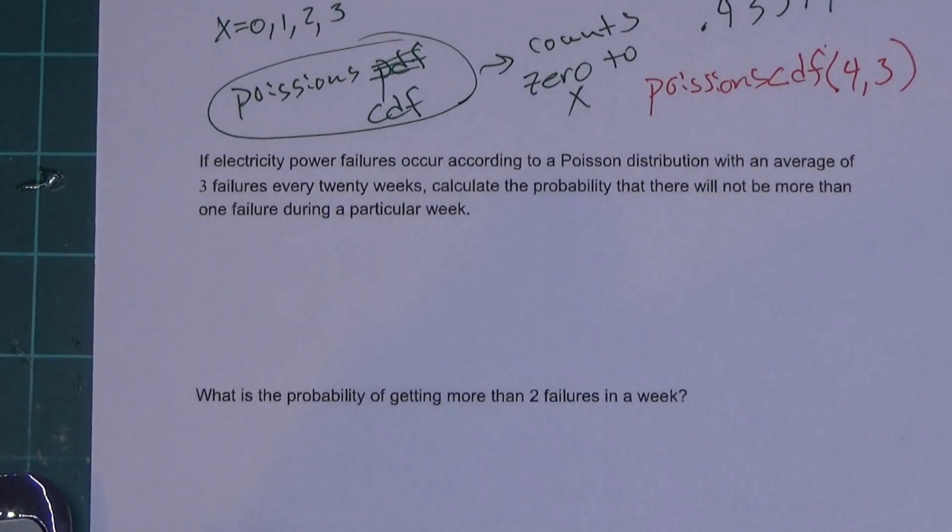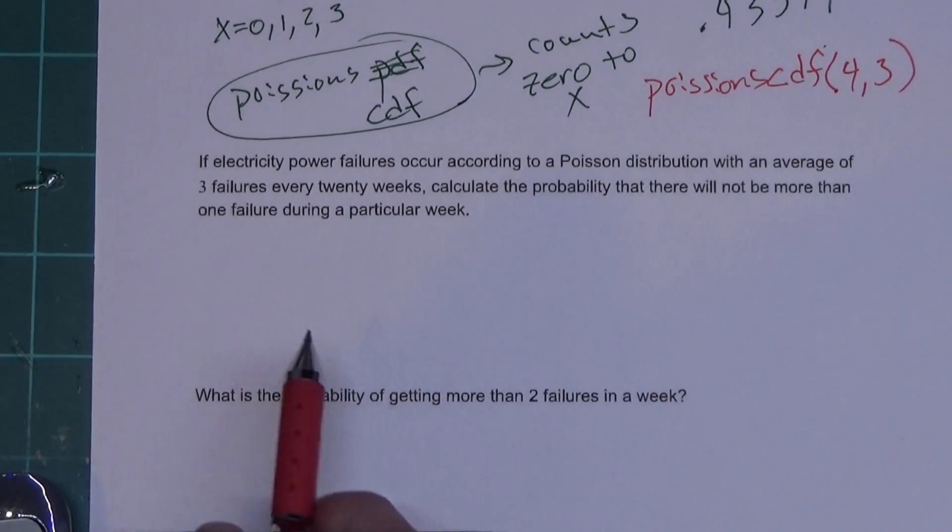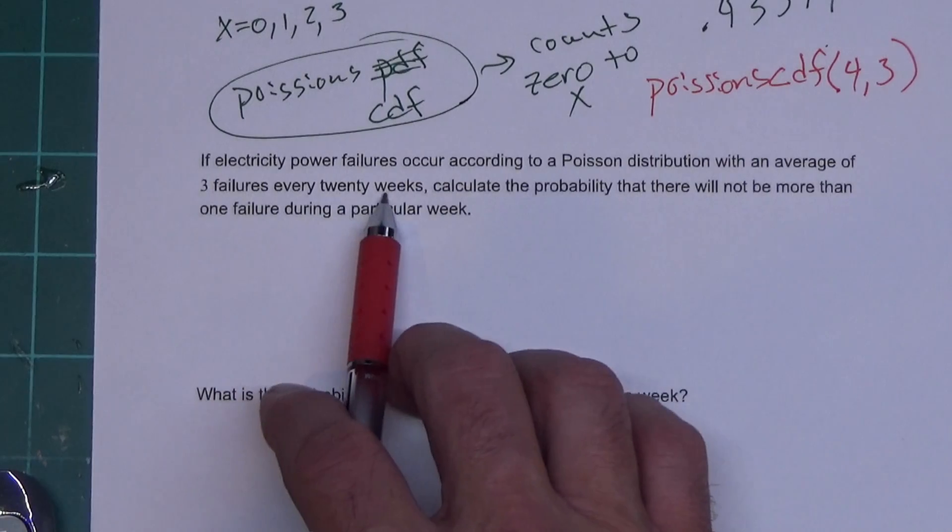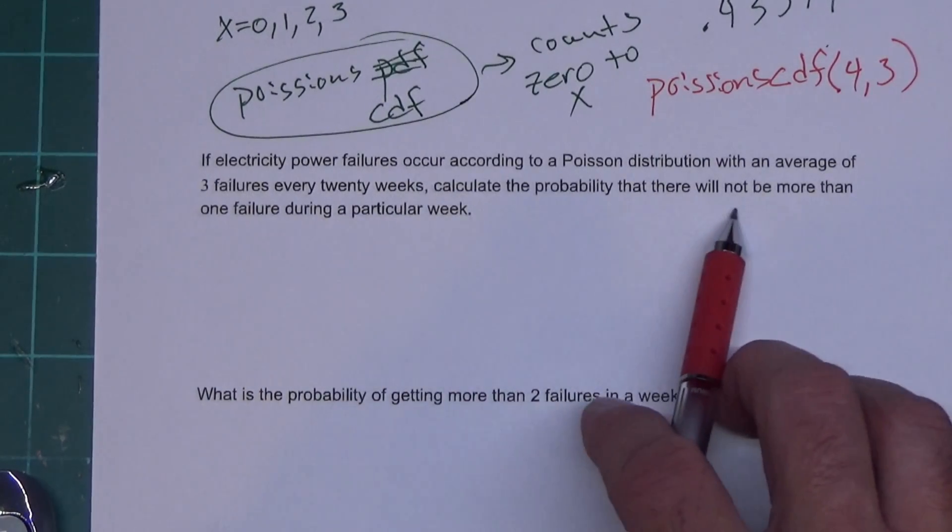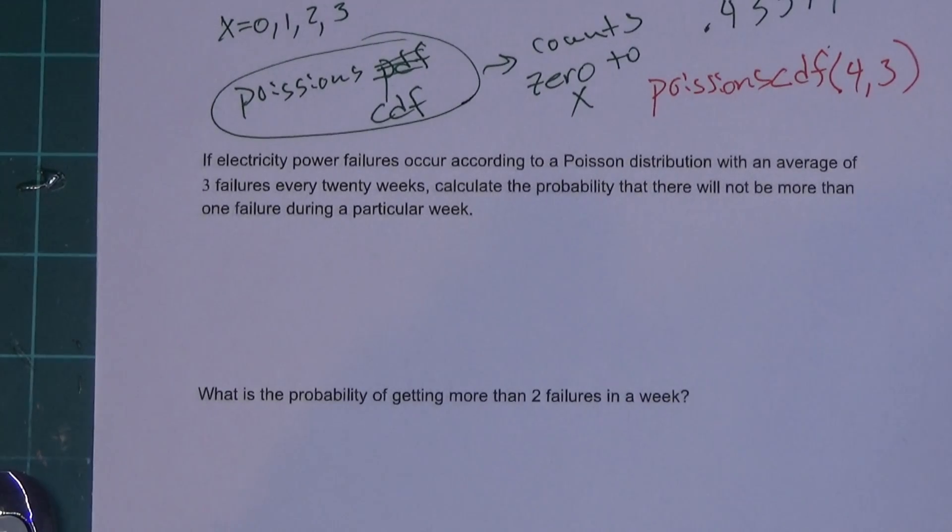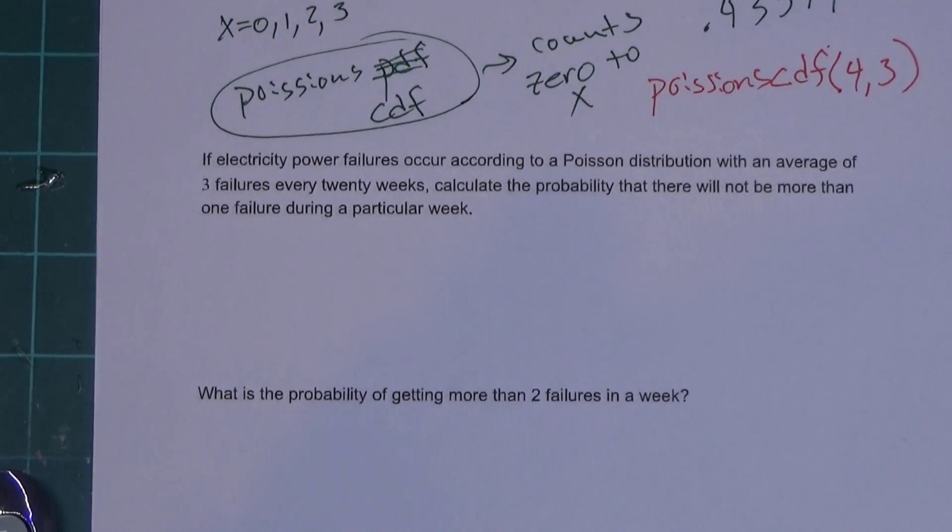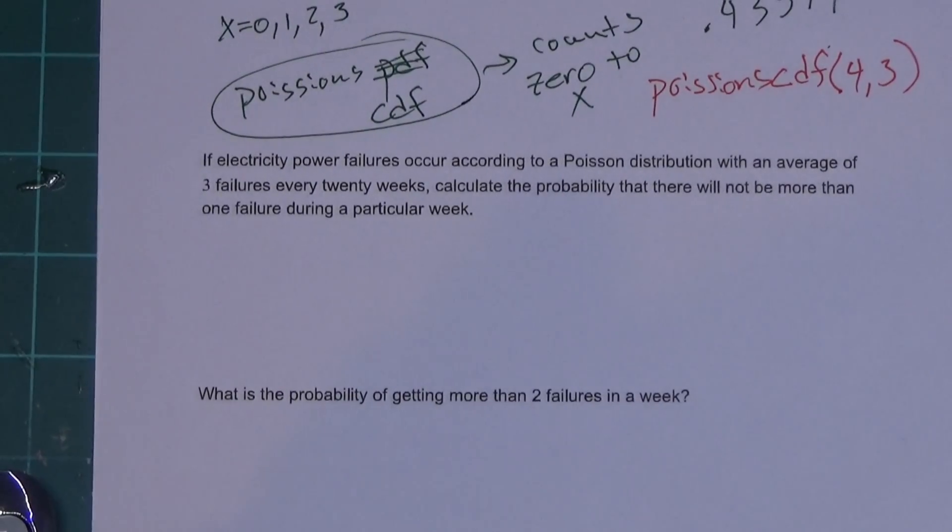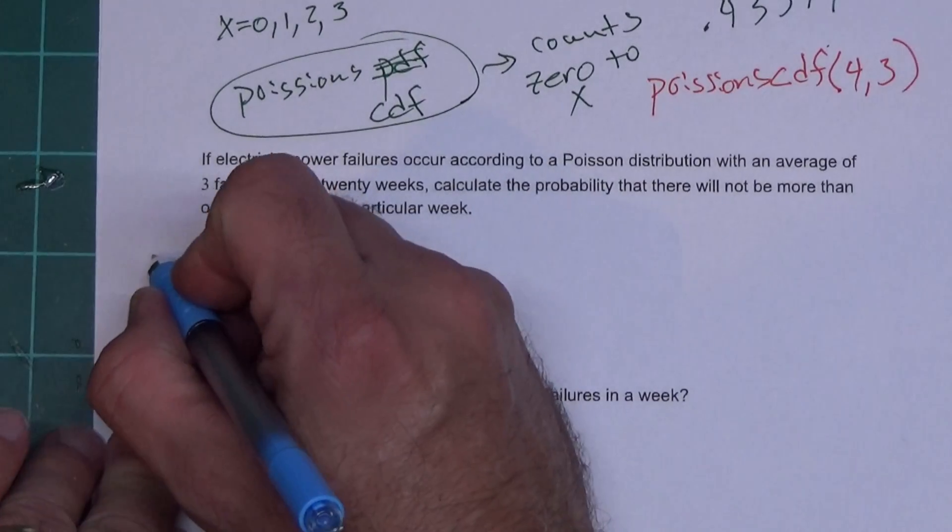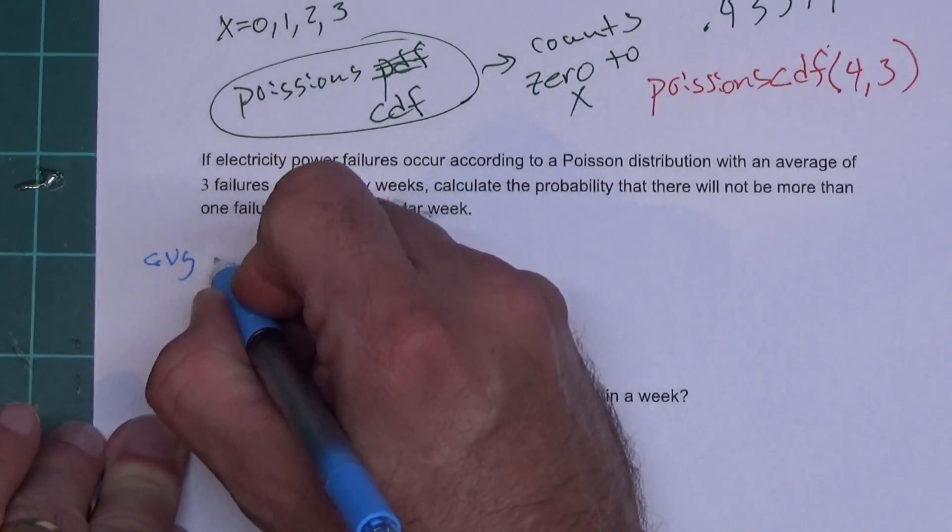Let's go on. There's two more of them on here. This one says: if electrical power failures occur according to a Poisson distribution with an average of three failures every 20 weeks, calculate the probability that there will not be more than one failure during a particular week. Okay, one of the things about Poisson's is this average is shiftable. So they give the average for 20 weeks and I need one week - we can adapt to it.